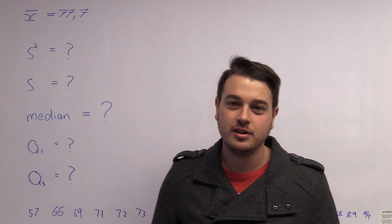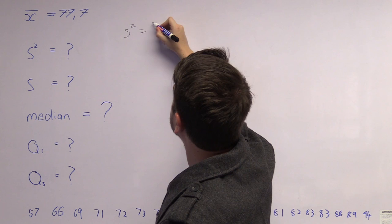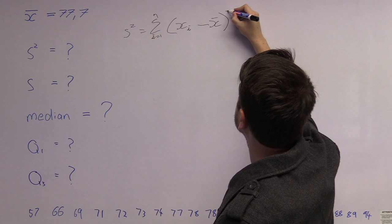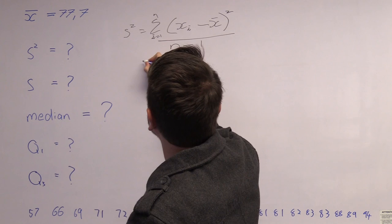Now we will do the second part, which is to calculate the variance. The variance is given by s_x squared equals the sum of all i from 1 to n of (x_i minus x-bar), which is the average we just calculated, squared, divided by n minus 1.